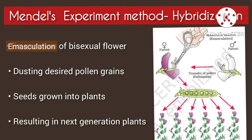There are bisexual flowers with both male and female parts — stamen and pistil. Emasculation is removing the male part, that is, the removal of anthers from a bisexual flower.